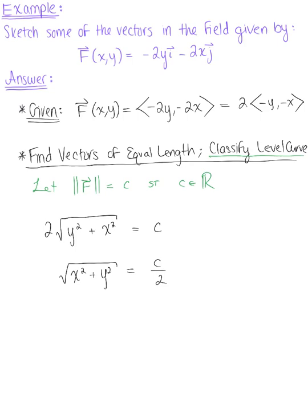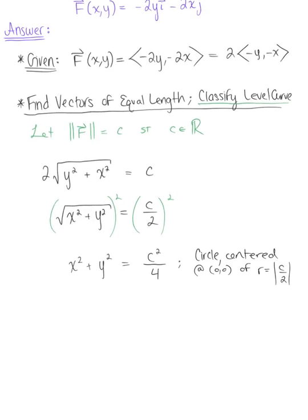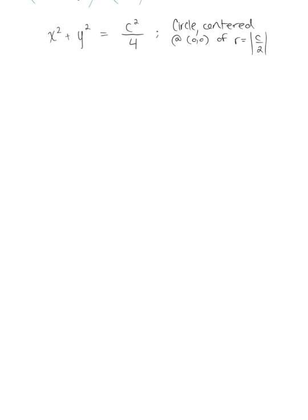We can now use this to identify and classify the level curve by squaring both sides of our equation, which leaves us with x squared plus y squared equal to C squared over 4. So we have a circle — our level curve is a circle centered at the origin of radius equal to the absolute value of C over 2. Now we'll go ahead and use this to sketch a graph.